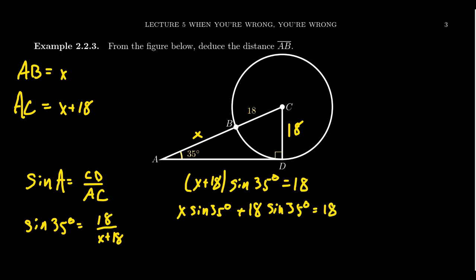So I subtract 18·sin(35°) from both sides. I get X·sin(35°) = 18 - 18·sin(35°). Then divide both sides by sin(35°).